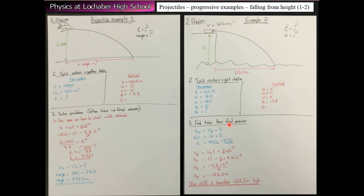We use the horizontal information to work out the time, then insert it into the vertical equation — the y subscripts just indicate it's vertical. We solve and get −122.5 meters. The minus sign indicates direction, but when asked how tall the cliff is, you state it as 122.5 meters high. We should also round to three significant figures to match the original data.